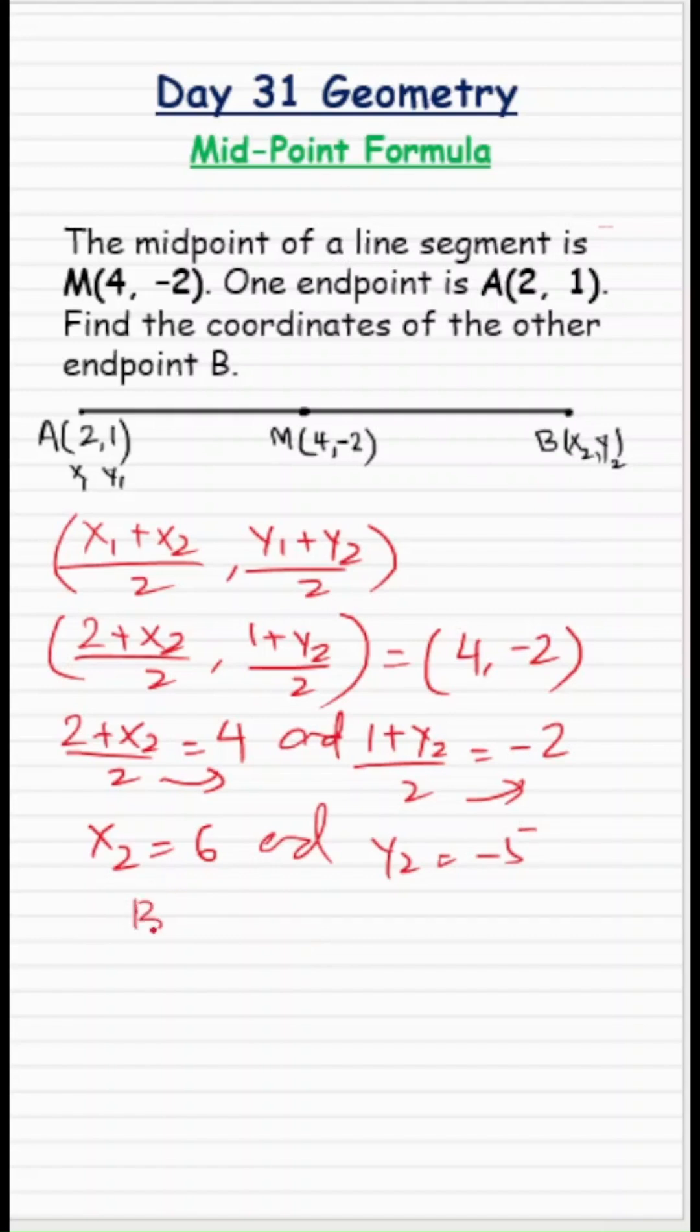So the coordinates of B are (6, -5). That's all.